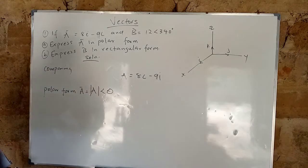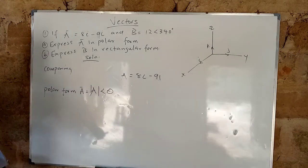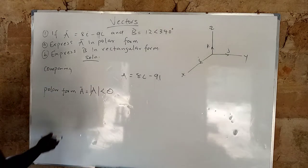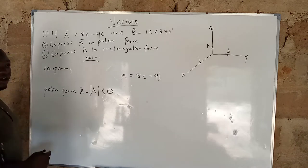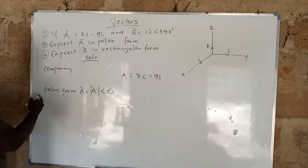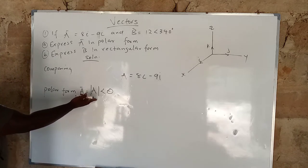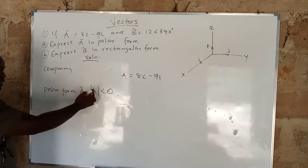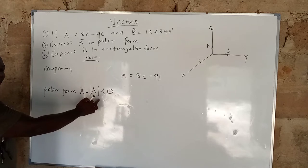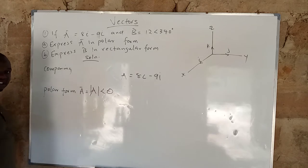The formula used for converting from rectangular to polar form is: the vector of A equals the magnitude of A at the angle theta.